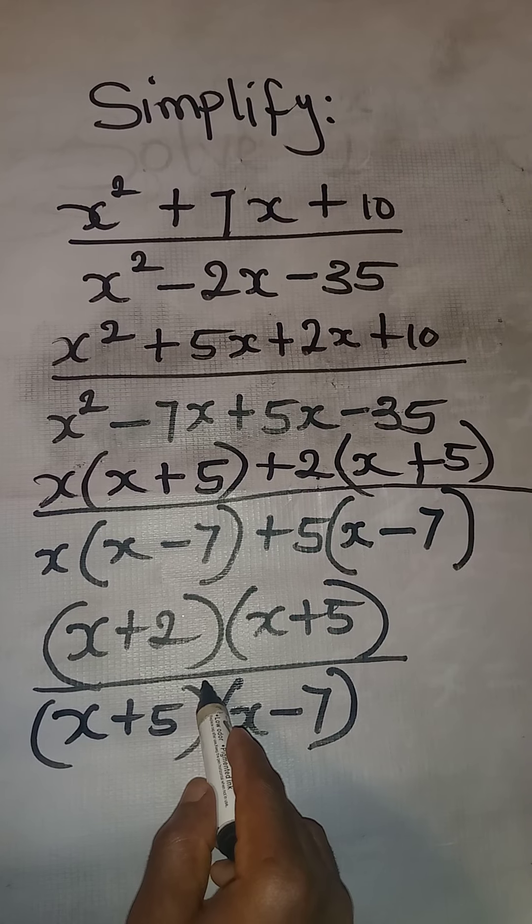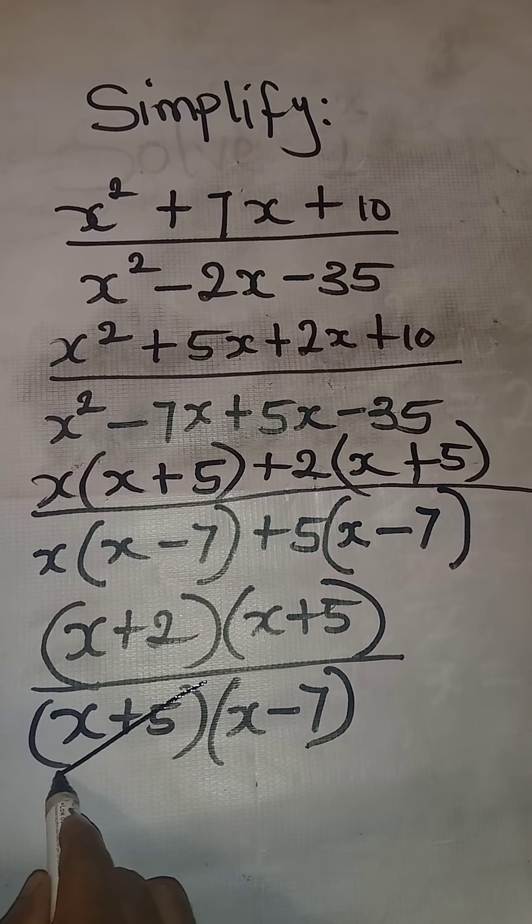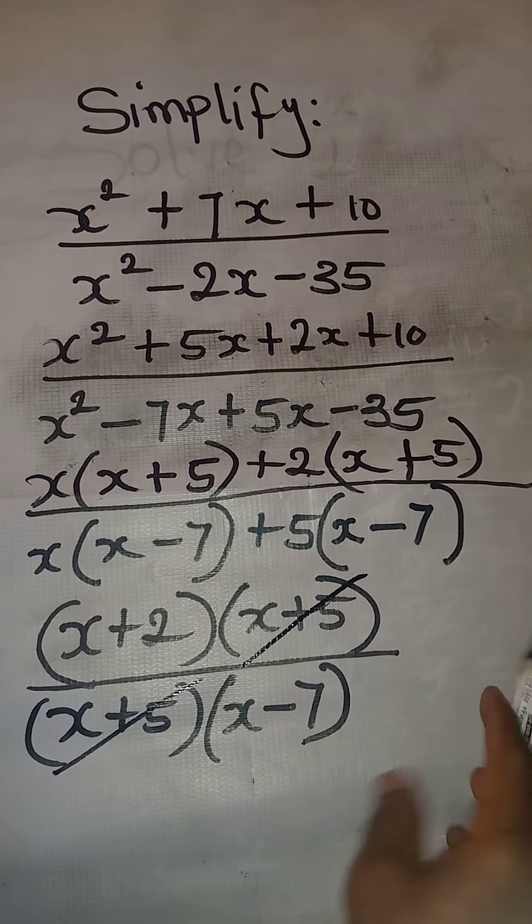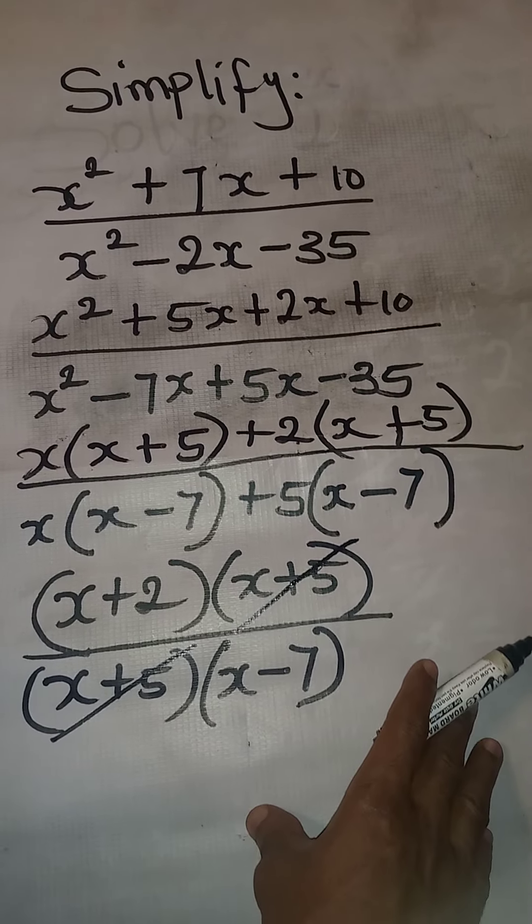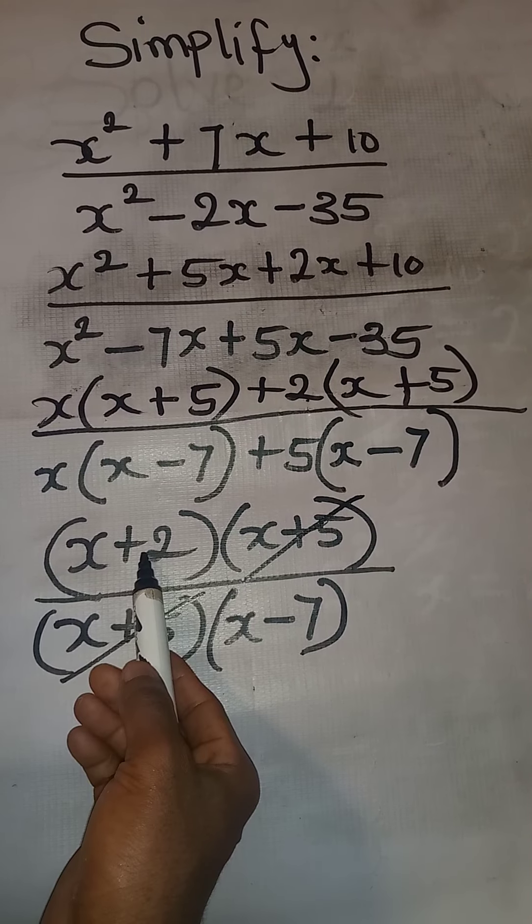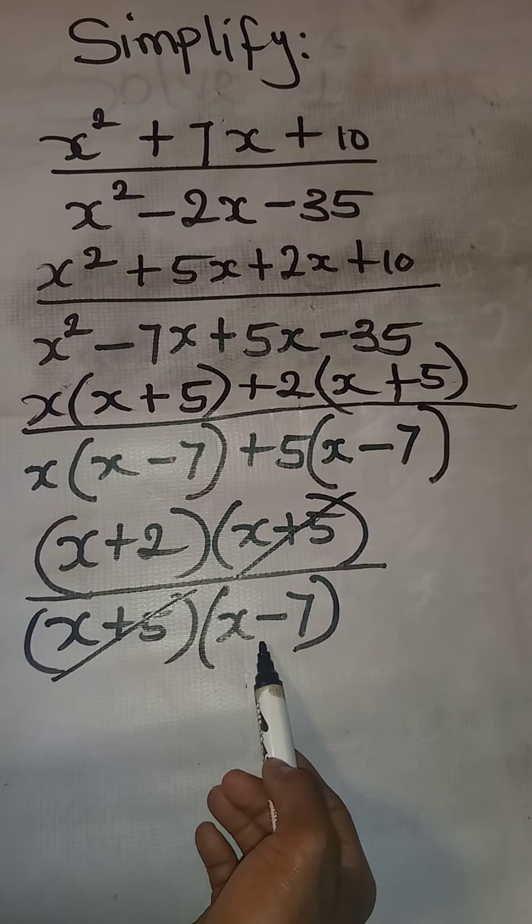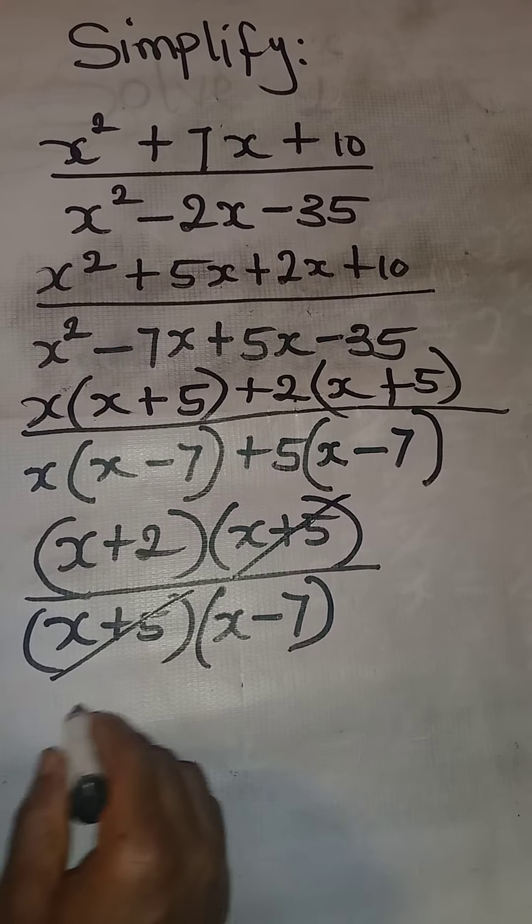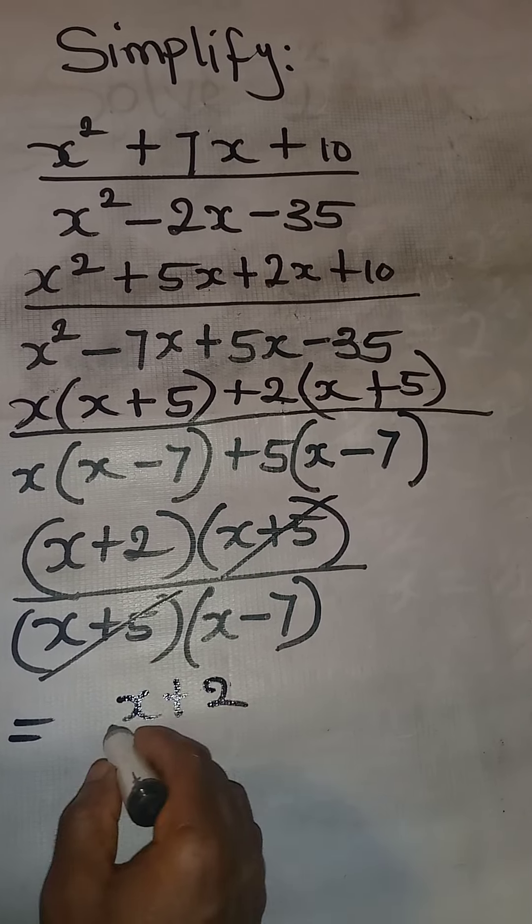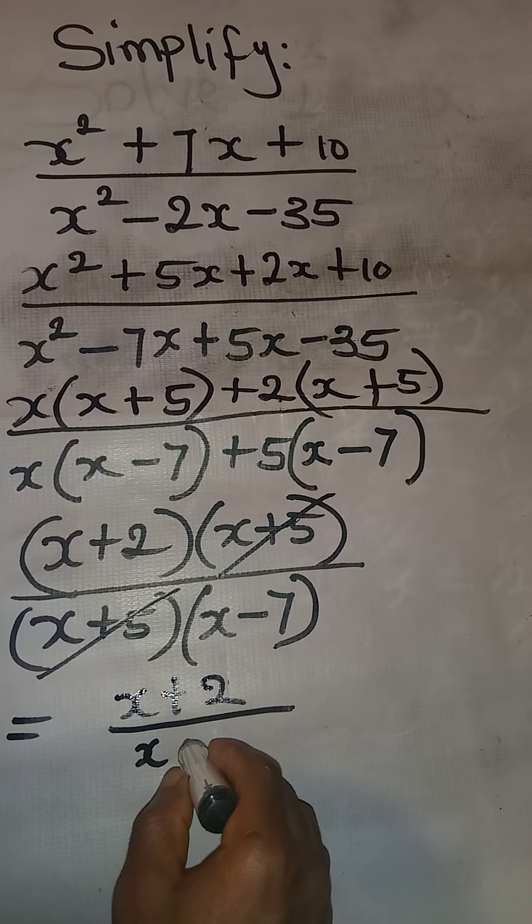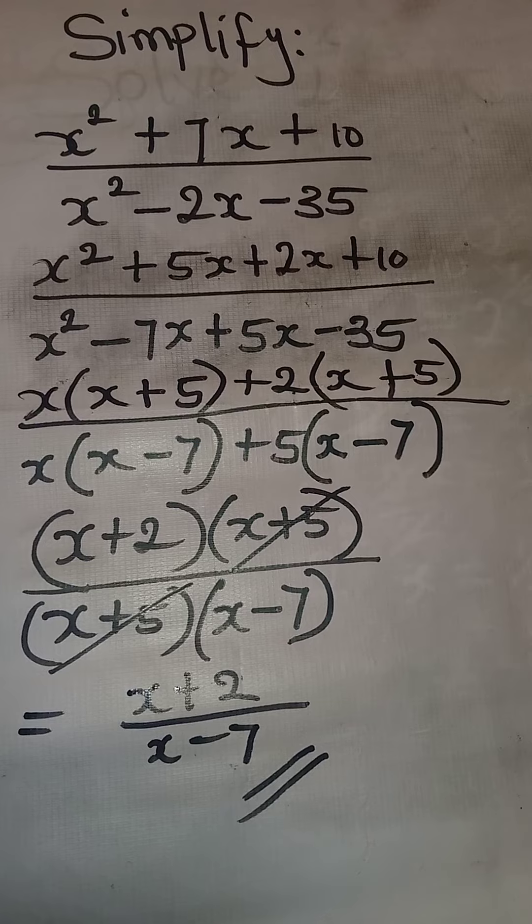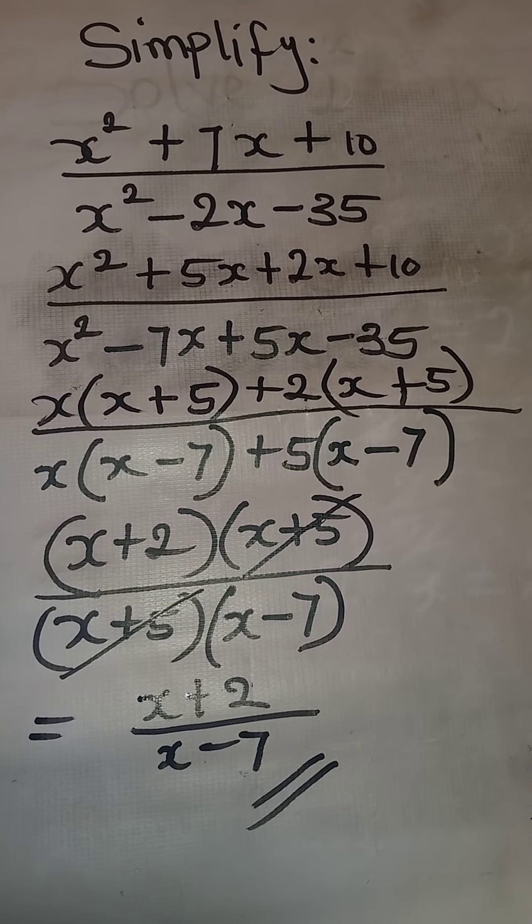So that means they can cancel each other. From the denominator, we have x plus 5. x plus 5 will cancel itself from the numerator and from the denominator. And then the next thing that we have is x plus 2 all over x minus 7. So, final answer, x plus 2 all over x minus 7 becomes the final answer.